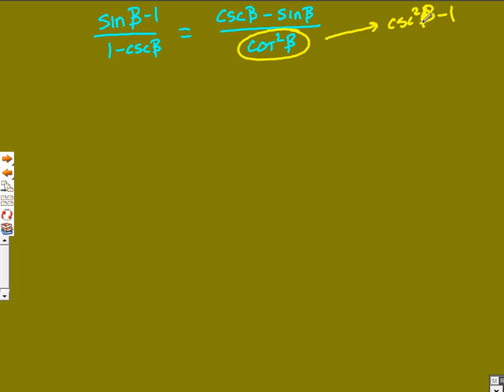Well what I notice here though, is technically I have almost half of it. If I had one plus cosecant, I would get a difference in squares that looks very similar in that. So that's how I'm going to start, is by multiplying by one plus cosecant of beta on top and bottom.